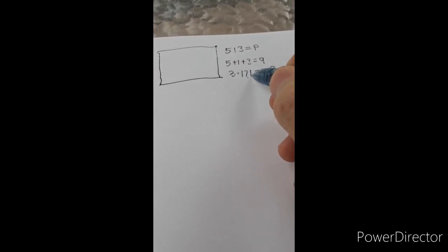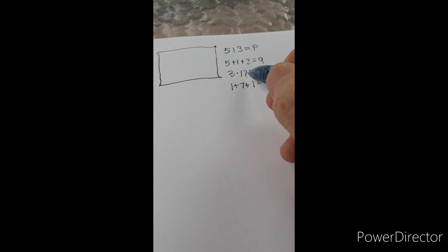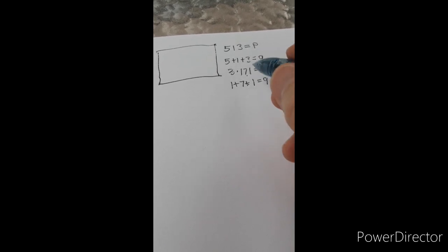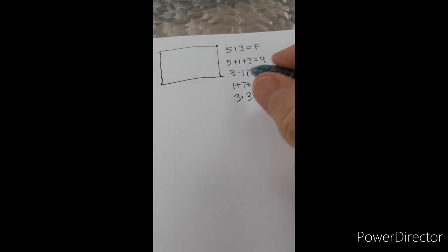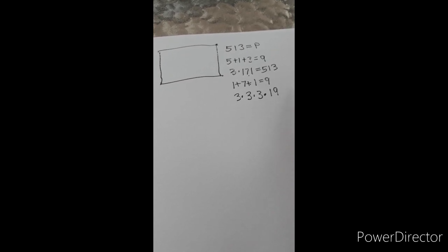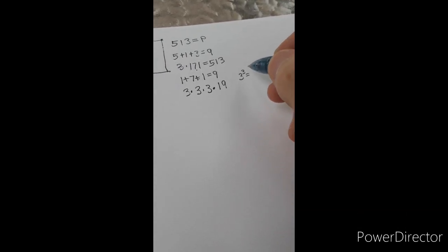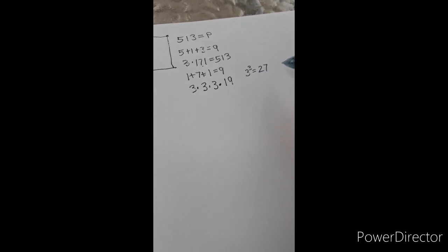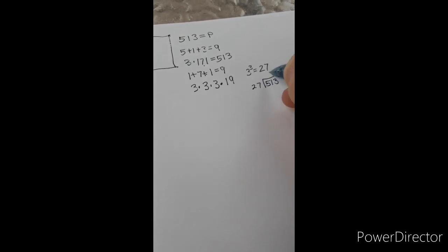1 plus 7 plus 1 is also 9, that means 171 is divisible by 9. So what we end up with is 3 times 3 times 3 times 19. In other words, 3 cubed, which is 27. If I divide 27 into 513, I'm going to get 19.